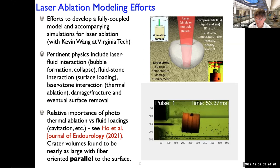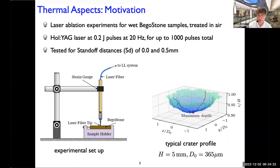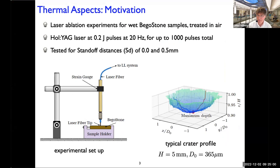A large part of our modeling efforts is to better understand the relative importance of photothermal effects compared to fluid loads from bubble collapse, cavitation, and related effects, in hopes of informing treatment protocols. Today I'll focus on just the photothermal component, and one way to do that is to remove the coupling with the surrounding fluid by conducting laser ablation experiments of wet begostone samples treated in air instead of underwater.